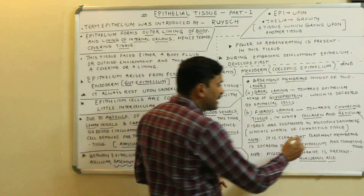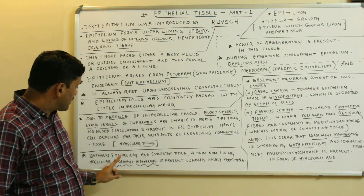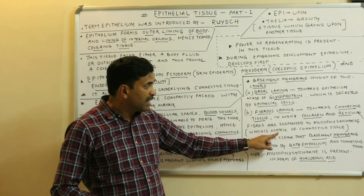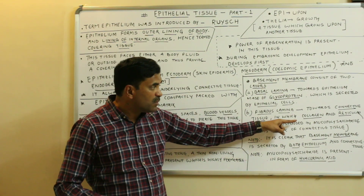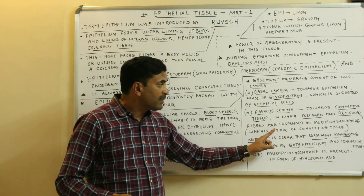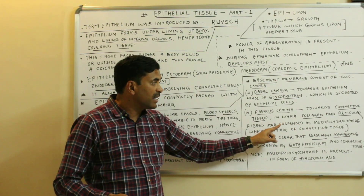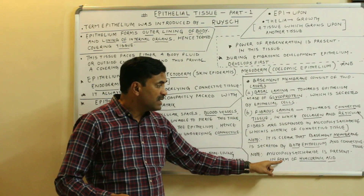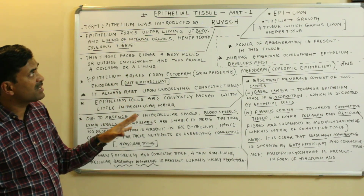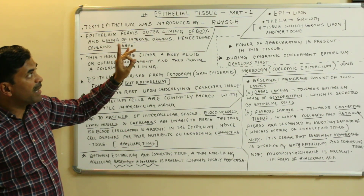This indicates that the basement membrane is secreted by both the epithelium and the connective tissue. The matrix of the connective tissue, known as mucopolysaccharide, in which collagen and reticular fibers are suspended, is present in the form of hyaluronic acid.